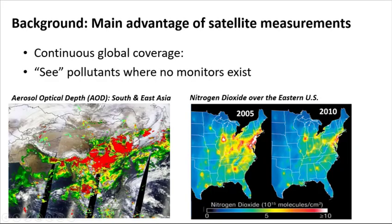Proceeding with our background discussion, we highlight on this slide the main advantage of satellite air quality measurements: the potential for much broader and complete spatial coverage compared to what can be obtained with ground monitoring alone. Examples illustrating this are shown below. On the left is an image of aerosol optical depth detections across South and East Asia of particulate air pollution, often associated with fine particulate such as PM2.5. The red areas indicate high aerosol optical depth, decreasing across green and yellow to lower values. The image illustrates the broad spatial coverage possible from satellites, which are able to see down across large areas uniformly, as opposed to ground monitors, which only measure at locations where monitors are sited.